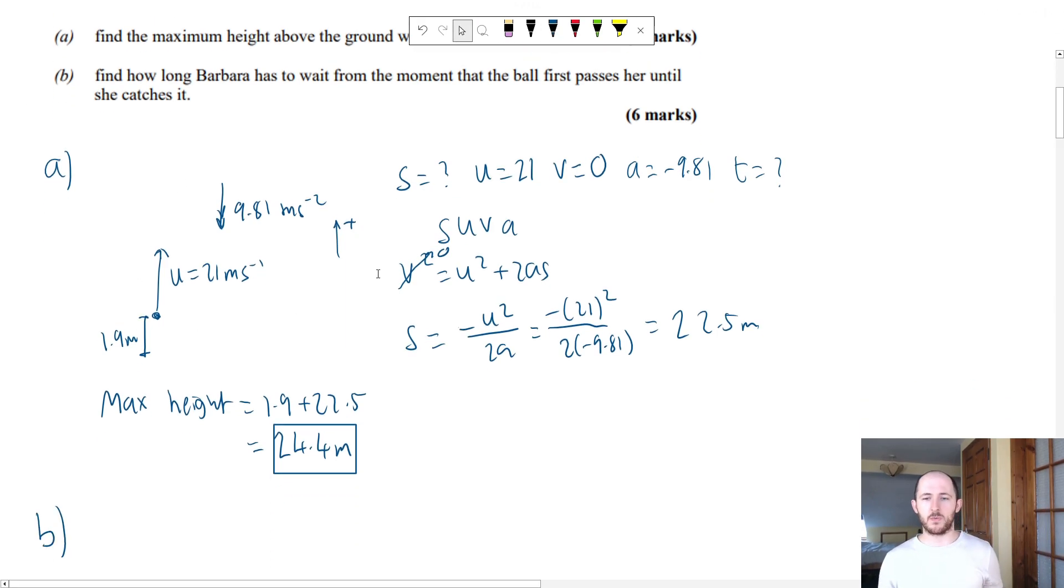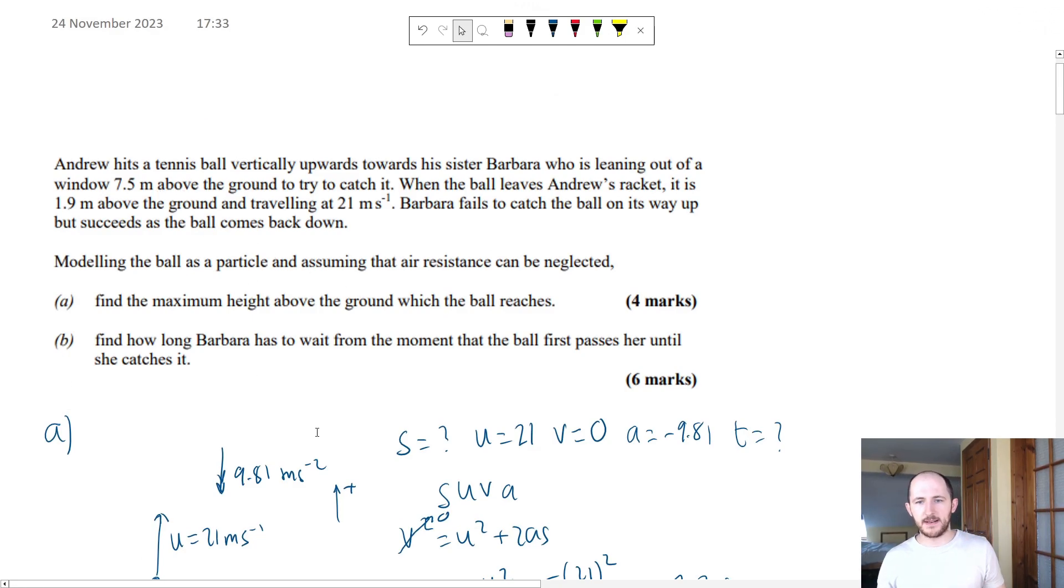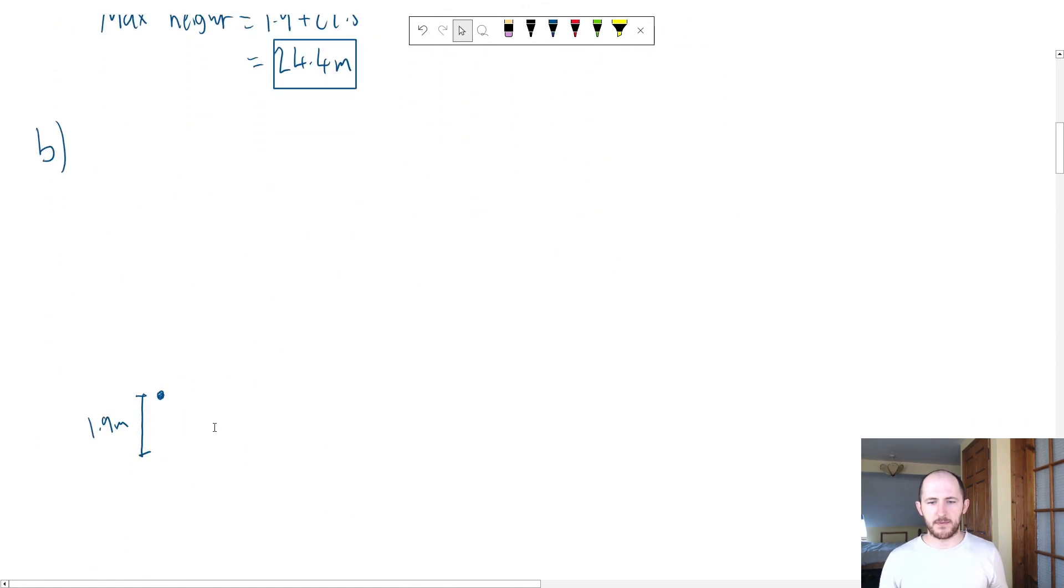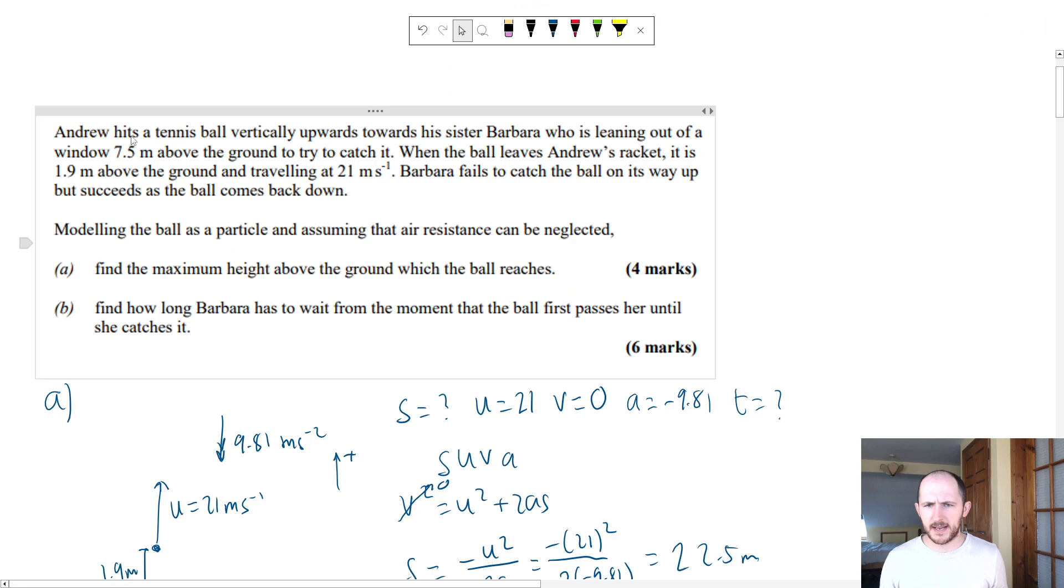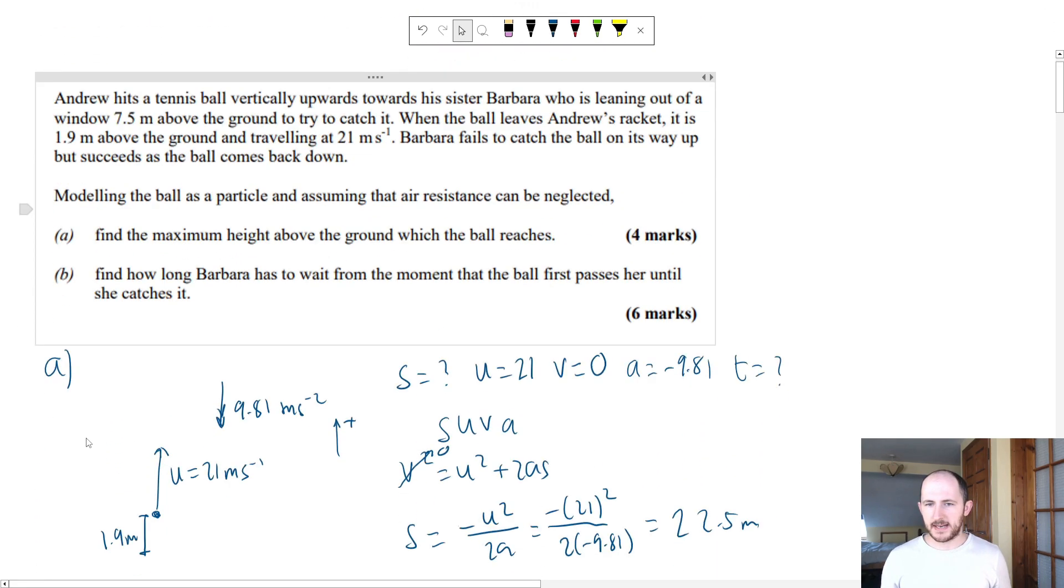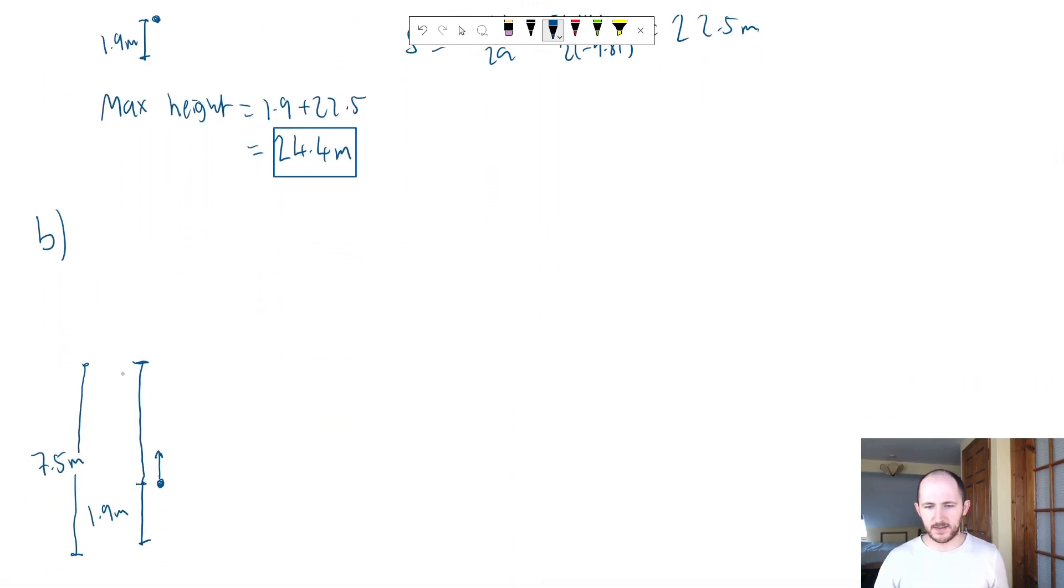Now, if we look at the question one more time, Andrew's hitting a tennis ball upwards and his sister is leaning out of a window. So what we're going to do is we're going to redraw our diagram. We have this 1.9 meters that's initial. And then we have that Barbara is 7.5 meters above the ground. So from this point all the way to the ground is 7.5 meters. We still have the U being the exact same value. We have U is 21 meters per second. And we still, of course, have the acceleration downwards of 9.81 meters per second squared.